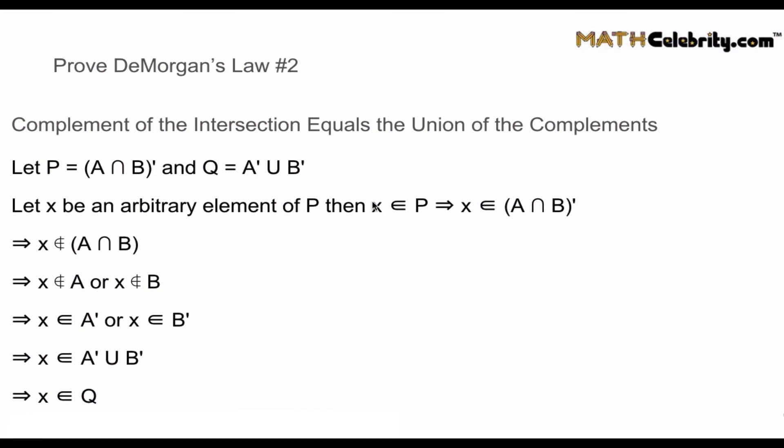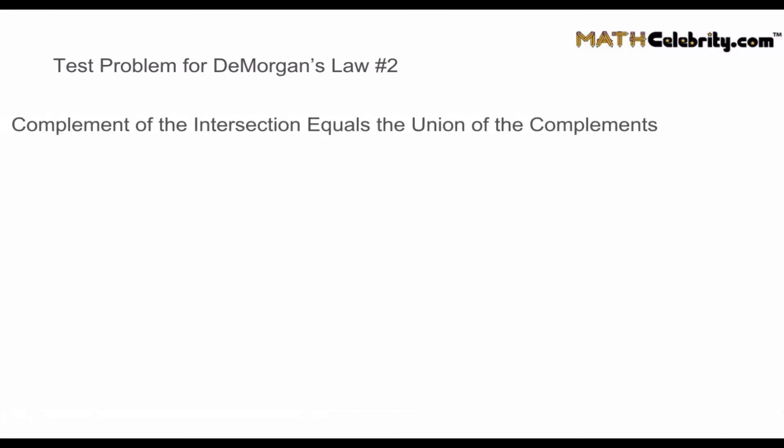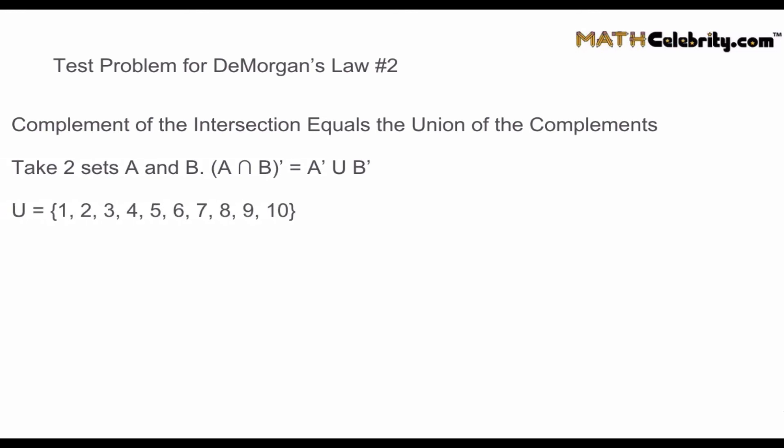Let's apply the second DeMorgan's Law with a real-world problem. The complement of the intersection equals the union of the complements. The universal set is again numbers 1 to 10. A = {1, 2, 3, 4, 5} and B = {2, 4, 6}, the same sets as before.